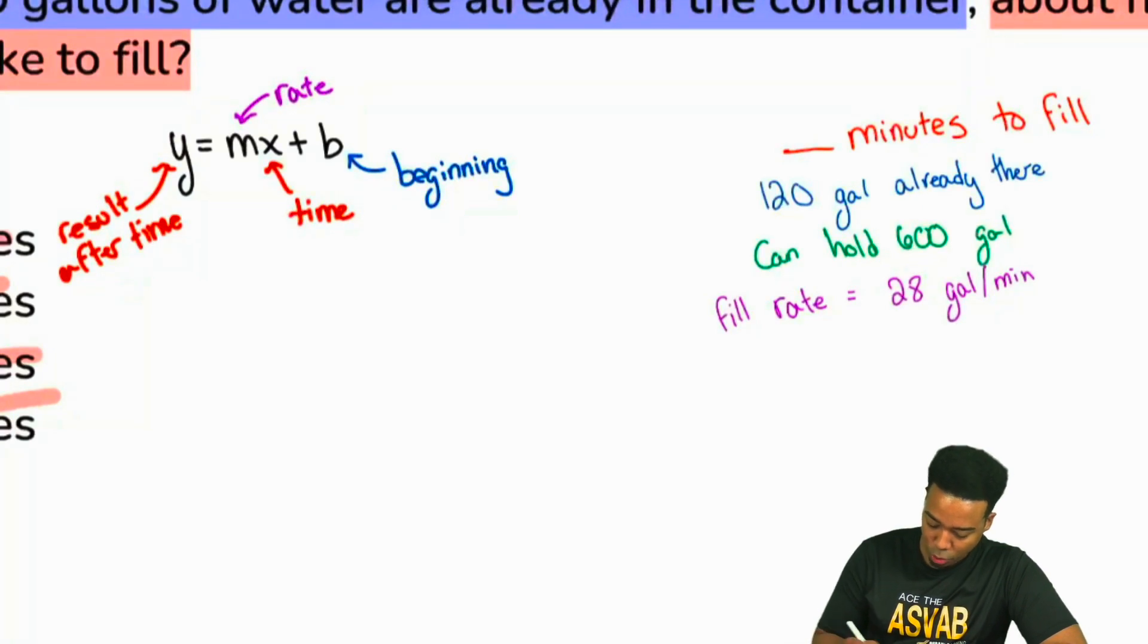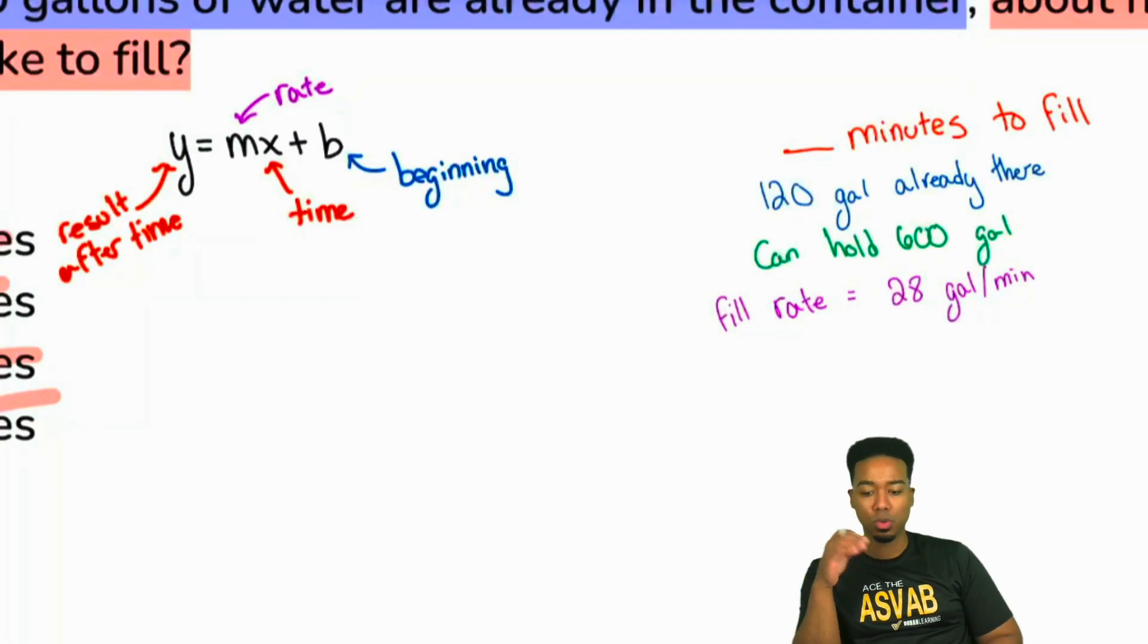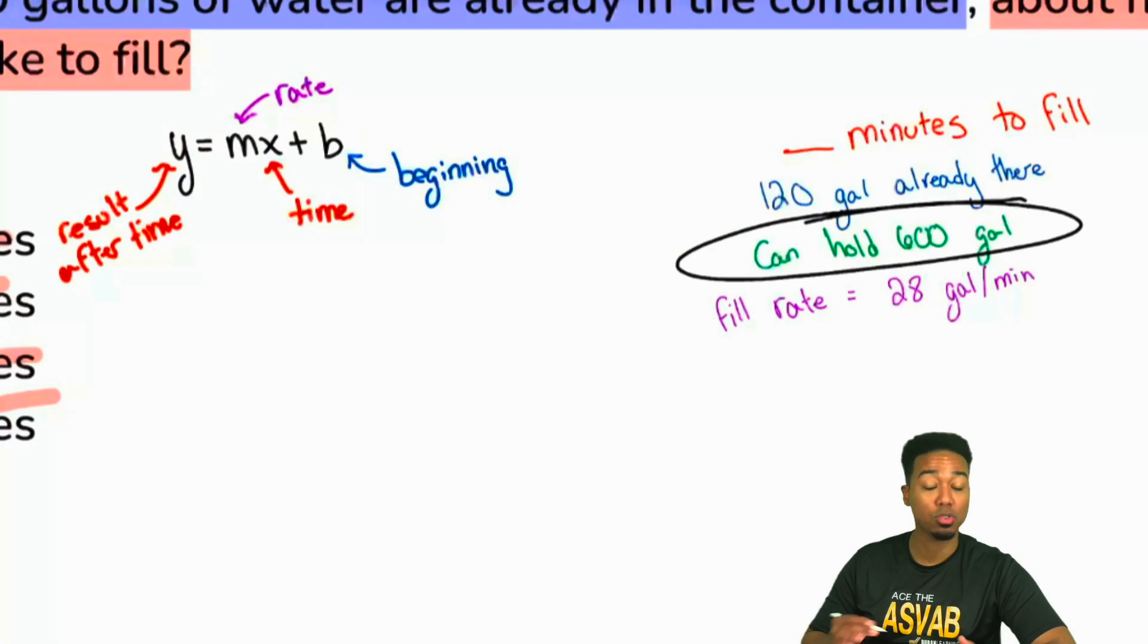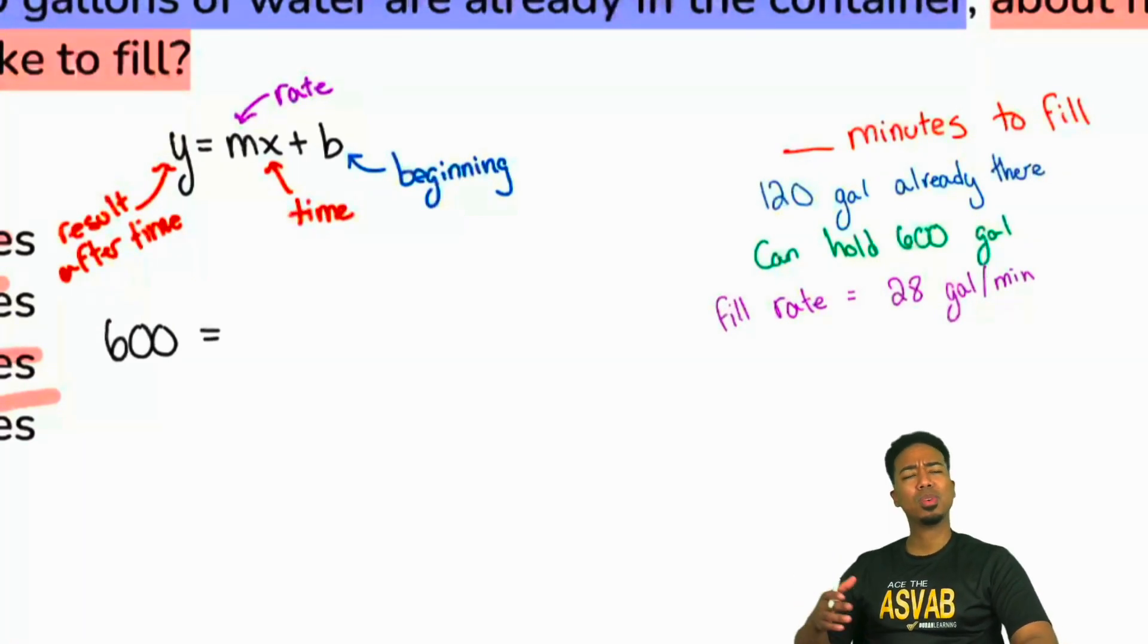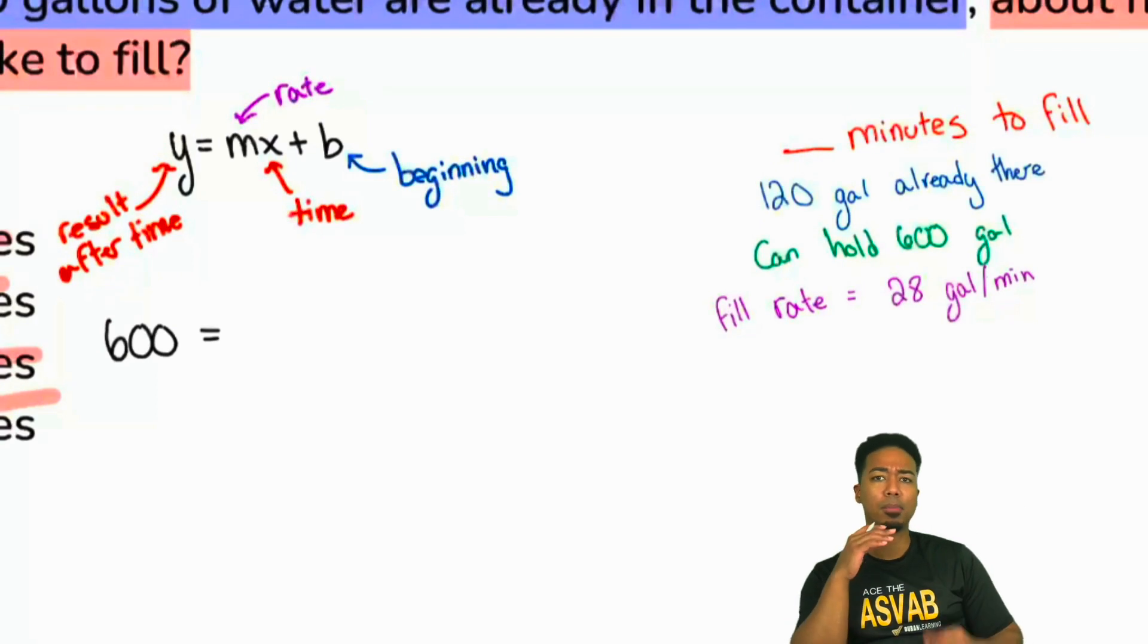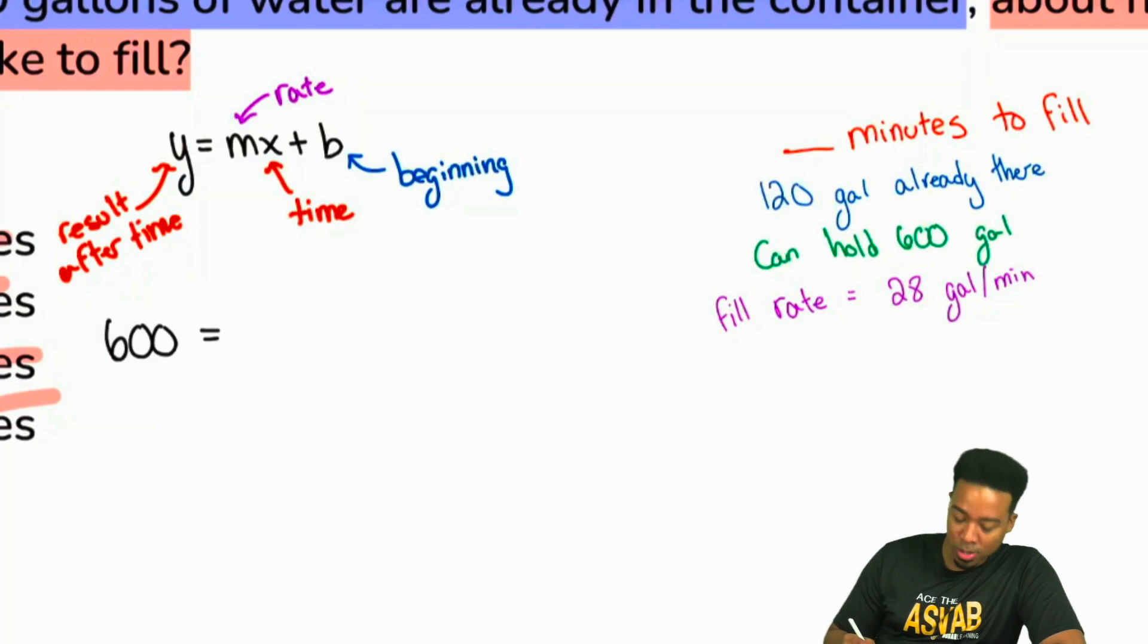Let's go ahead and plug in the values that we have. My party people, what is it that we are trying to achieve? What is the result? How many gallons are we trying to get to? What's the result that we're trying to get to? When do we stop? That's right, 600 gallons. That's the point at which we stop. It can hold 600 gallons, so that's as far as we can go.